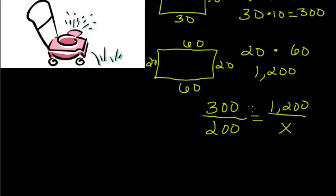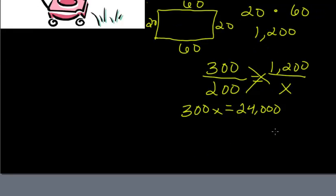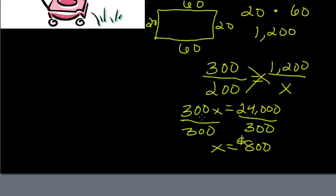Now using cross multiplication, we can do x times 300, which would be 300x. And we can set that equal to 200 times 1,200, which would be equal to 24,000. Now to get x by itself, we can divide both sides by 300. And 300 goes into 24,000 80 times. So the new cost of the grass is $800.